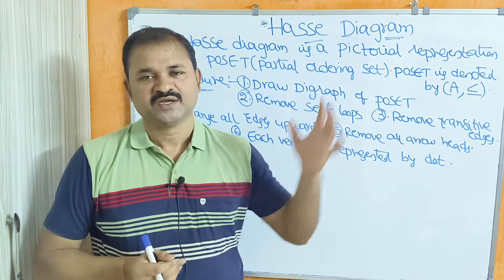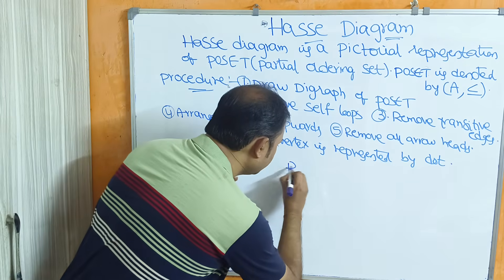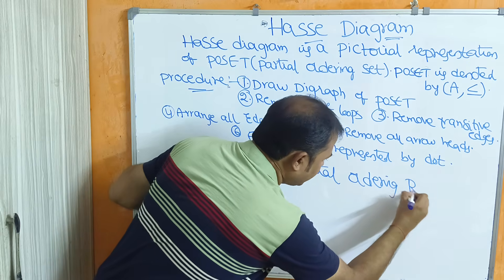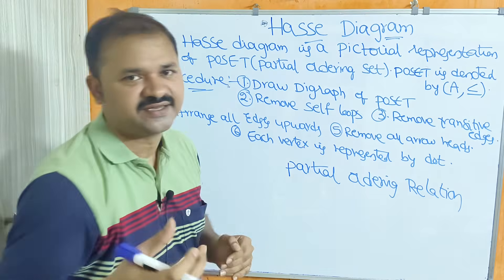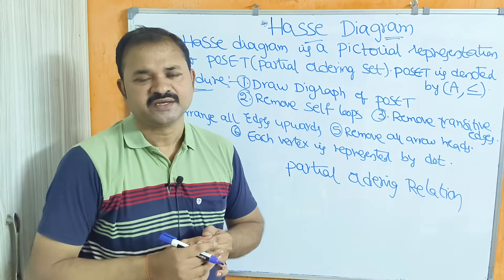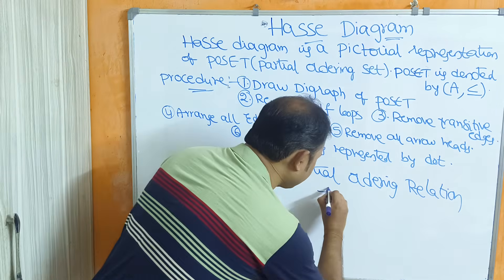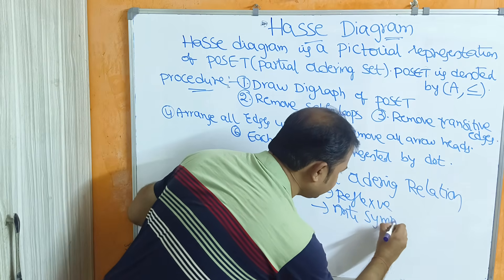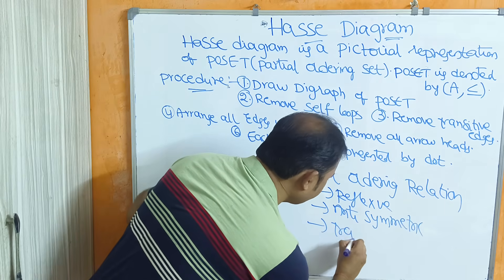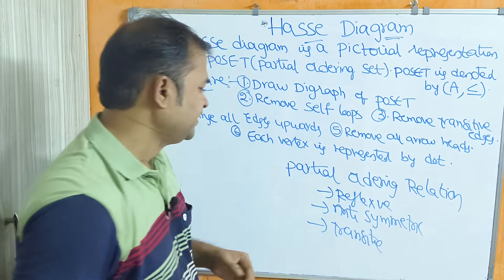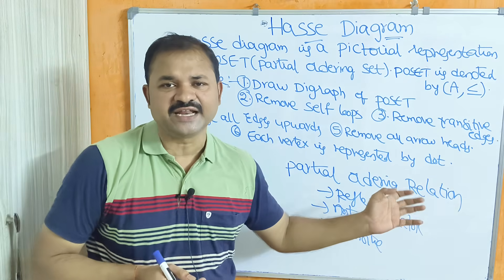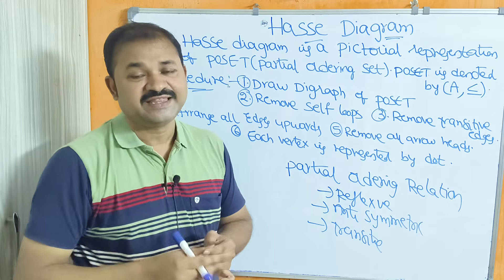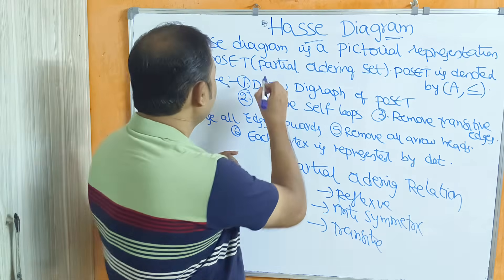First, let's see what a Hasse diagram is. Before the Hasse diagram, we have a relation called partial ordering relation. Hasse diagram comes under the relation topic in discrete mathematics. A partial ordering relation means a relation which is reflexive, anti-symmetric, and transitive. If your relation is reflexive, anti-symmetric, and transitive, then we can call that relation a partial ordering relation.